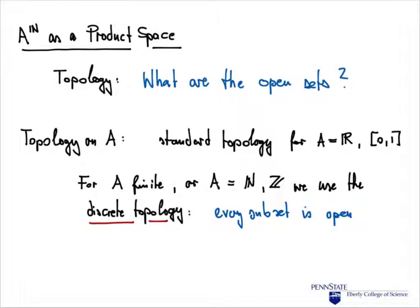We have the set of all infinite sequences over an alphabet, but we would like to put a little bit more structure on it. We start by looking at the topology — we want to put a topology on A to the N. Whenever we want to define a topology, we have to answer the question: what are the open sets? Because that is exactly what a topological space specifies.